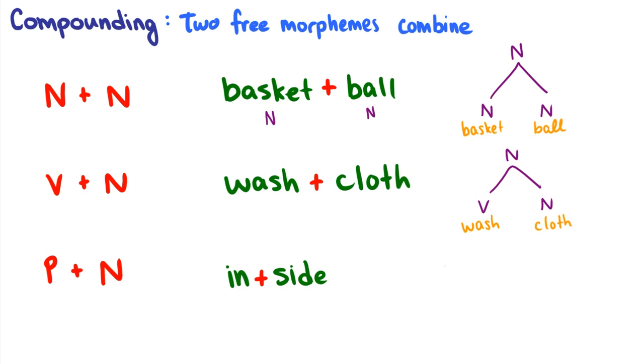We can also say something like inside. So inside is a case where we have the preposition in combining with a noun side, and that is making the preposition inside. So typically what happens is whenever we have a compound, it is the category of the second free morpheme that determines the category of the entire compound word. Some prepositions are an exception, in the case like inside or outside, where the preposition is determining the category of the compound. But typically, we can just look towards the rightmost free morpheme category to determine the category of the compound.